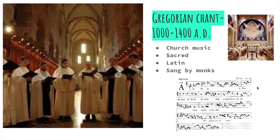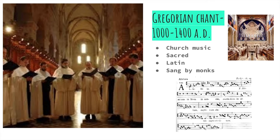Now we've jumped up to 1,400 AD. This is when music started being written down in a form more familiar to how we see it today. It started off as Gregorian chant. These people were monks who lived in the church, and this music is called sacred music. They sang in Latin, a very old language that a lot of other languages are derived from. Here's what early music notation looks like — there are four lines, not five like today, and some symbols that resemble notes, like eighth notes with little ovals.